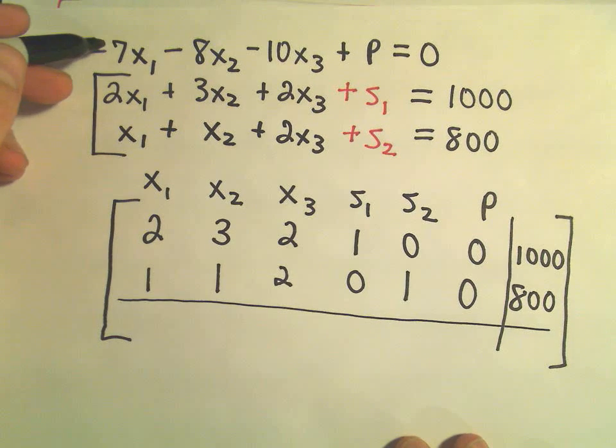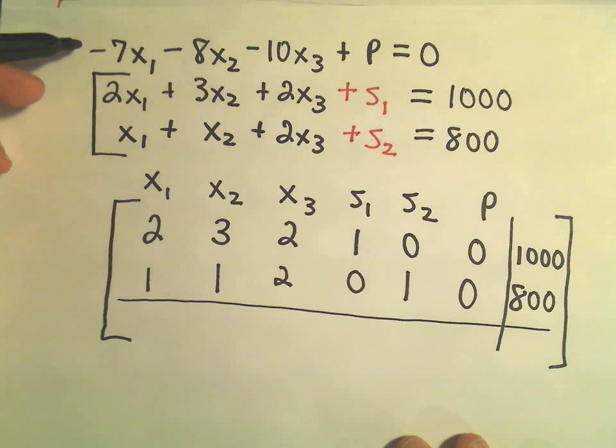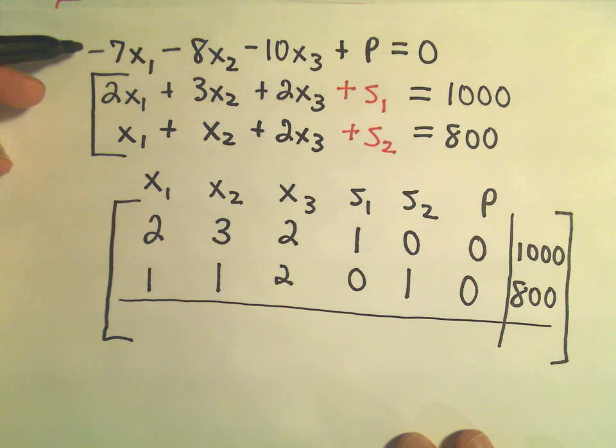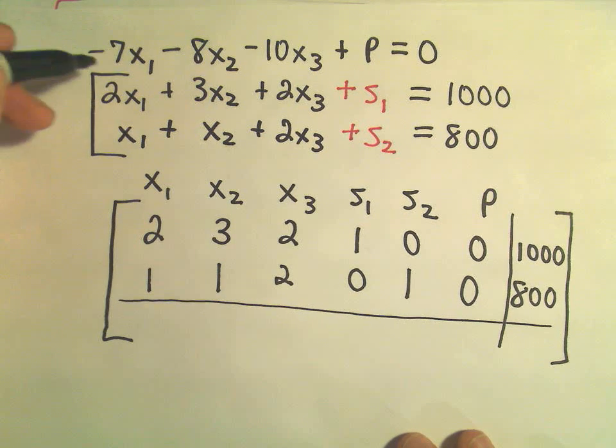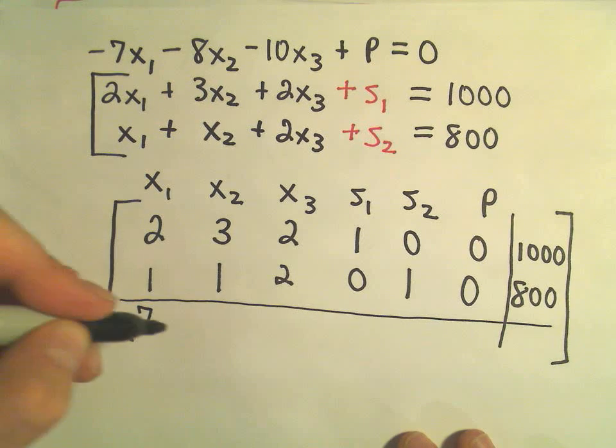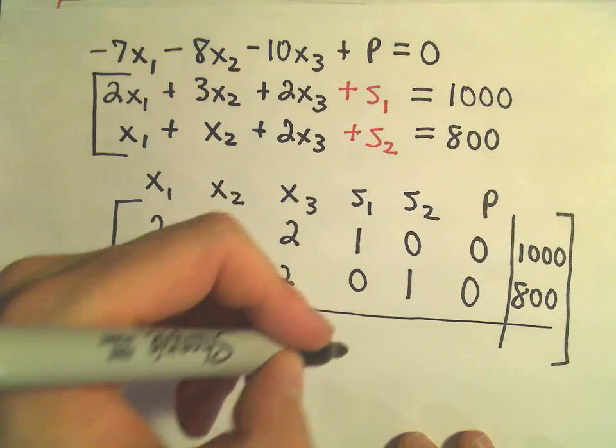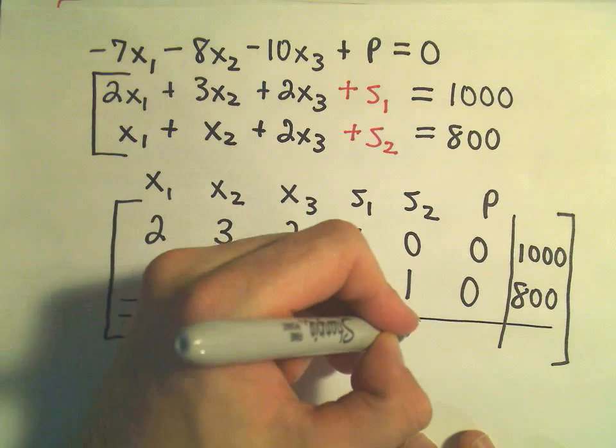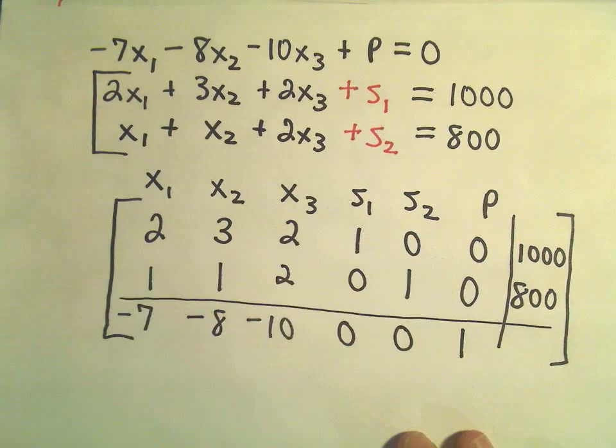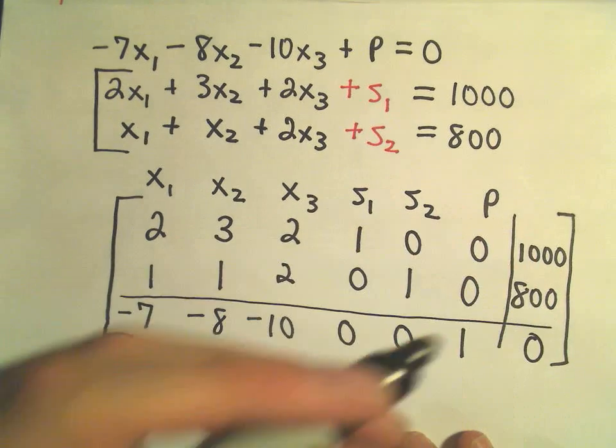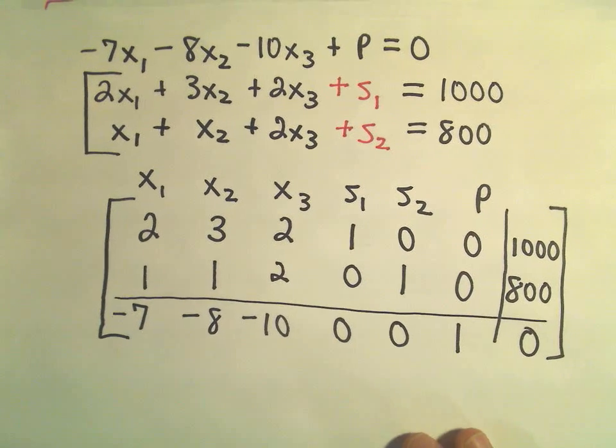Now we do the same thing. We put our function that we were trying to maximize, that goes in the very bottom row, and that's important, always want to stick that in the bottom. We've got negative 7, we've got negative 8, we've got negative 10, we have 0 s1, 0 s2, we have 1P, and then we have the value of 0 on the right side.